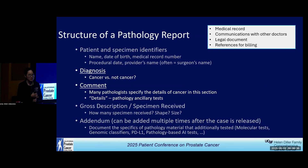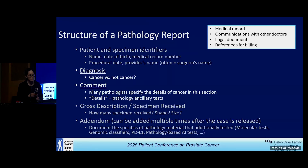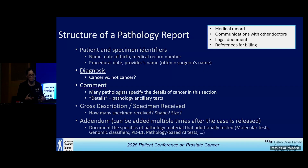They can look very different on the surface, but these are the five components you can see. First, the most important thing is the patient information — your name, your date of birth, what time the tissue was taken out from your body. Those things are essential to avoid mixing up different specimens. And then most of us here today want to hear about the diagnosis and the comment — what kind of cancer, or maybe not cancer, and what features of this cancer we are looking at.